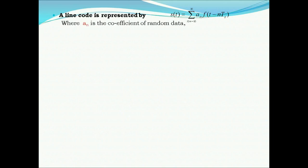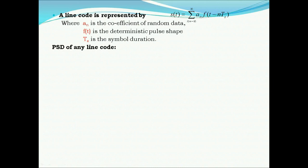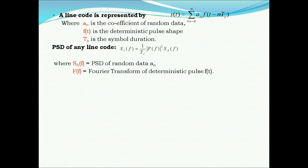Power Spectra of Line Codes. A line code is represented by S(t) = summation from n = −∞ to ∞ of a(n) · f(t − nTs), where a(n) is the coefficient of random data, f(t) is the deterministic pulse shape, and Ts is the symbol duration. The power spectral density is given by Ss(f) = (1/Ts) |F(f)|² · Sa(f), where Sa(f) is the PSD of random data a(n), and F(f) is the Fourier transform of the deterministic pulse f(t).